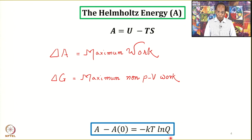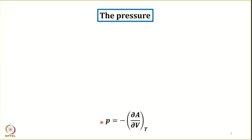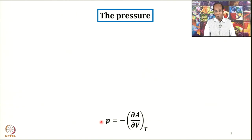Discussion on Helmholtz energy is therefore very important. Our original aim is to connect pressure with the molecular partition function. As shown, pressure is related to the Helmholtz function by the partial derivative: P = -(∂A/∂V) at constant temperature. Let us derive this equation.